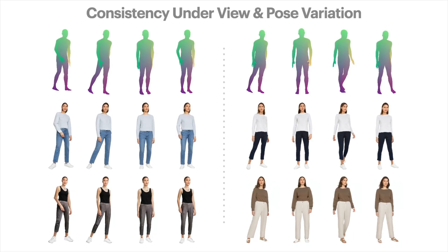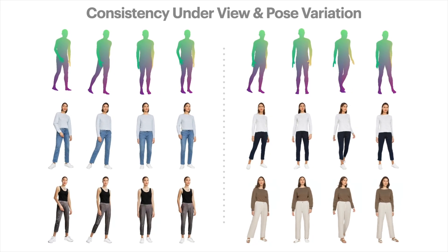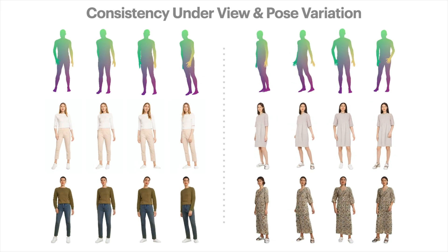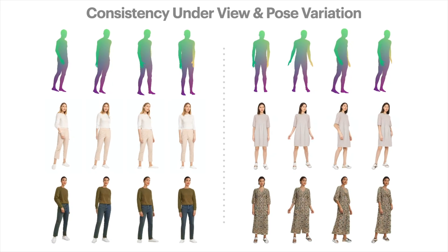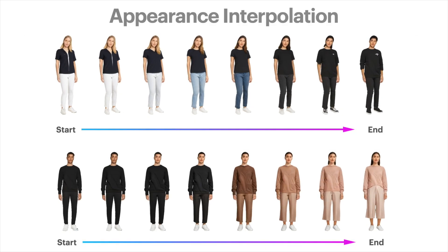Here, we examine the consistency of our results under view and pose variation. We show two cases separated by a dotted line. In each case, we show two identities, each under four different poses. Our model is also able to generate smooth interpolation of appearance while maintaining the accuracy of pose conditioning.